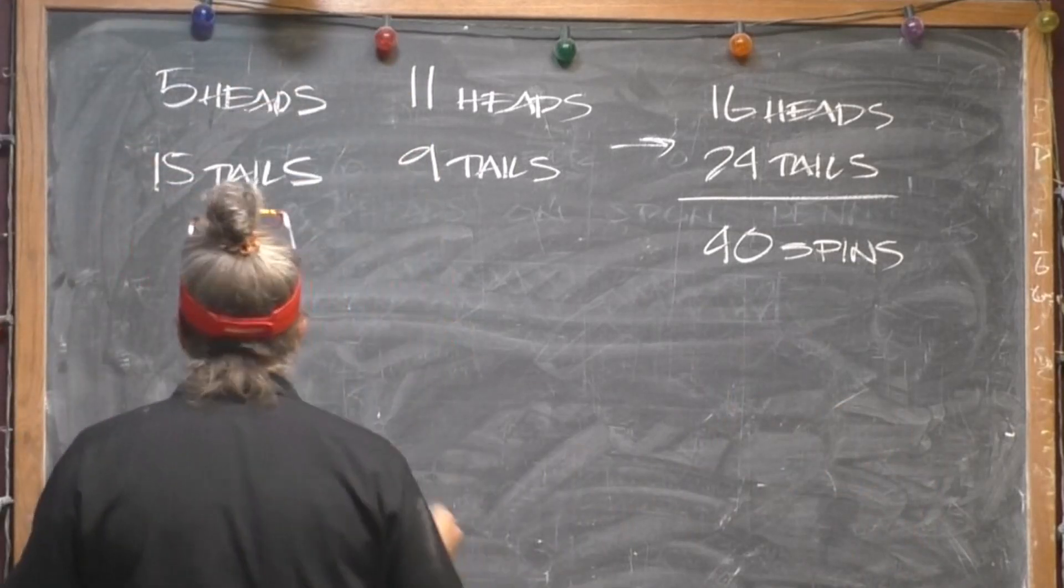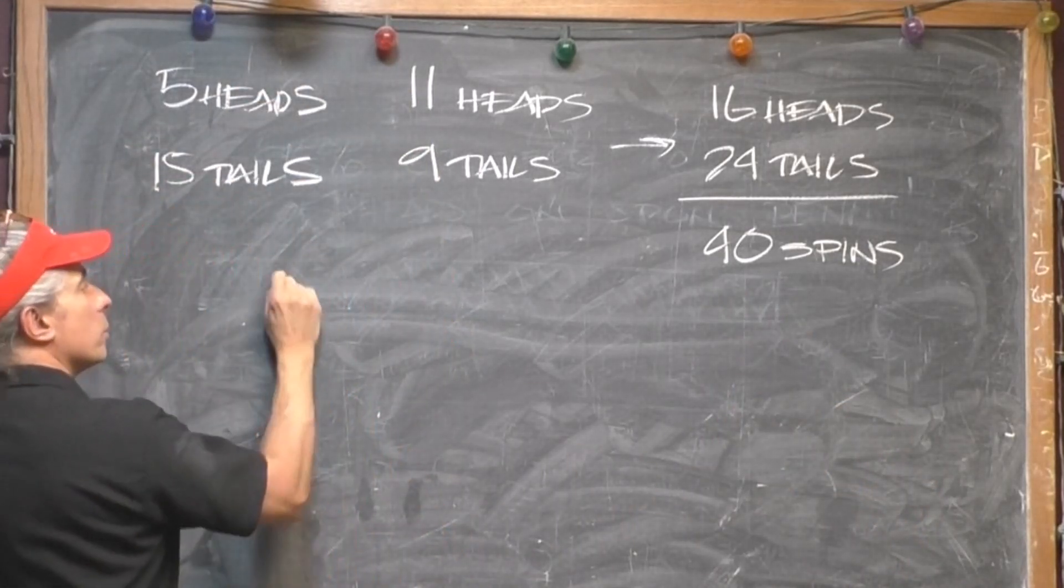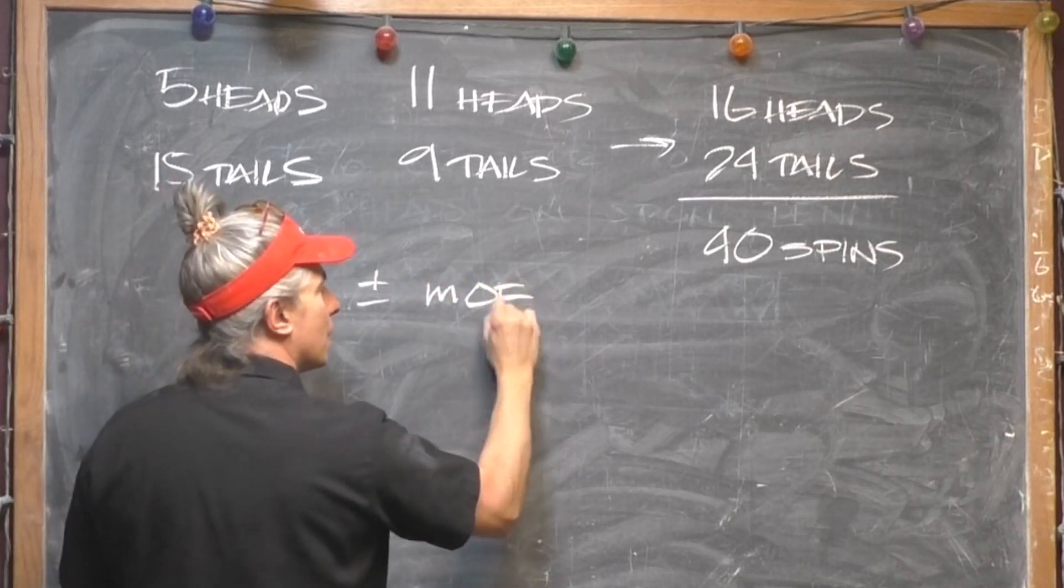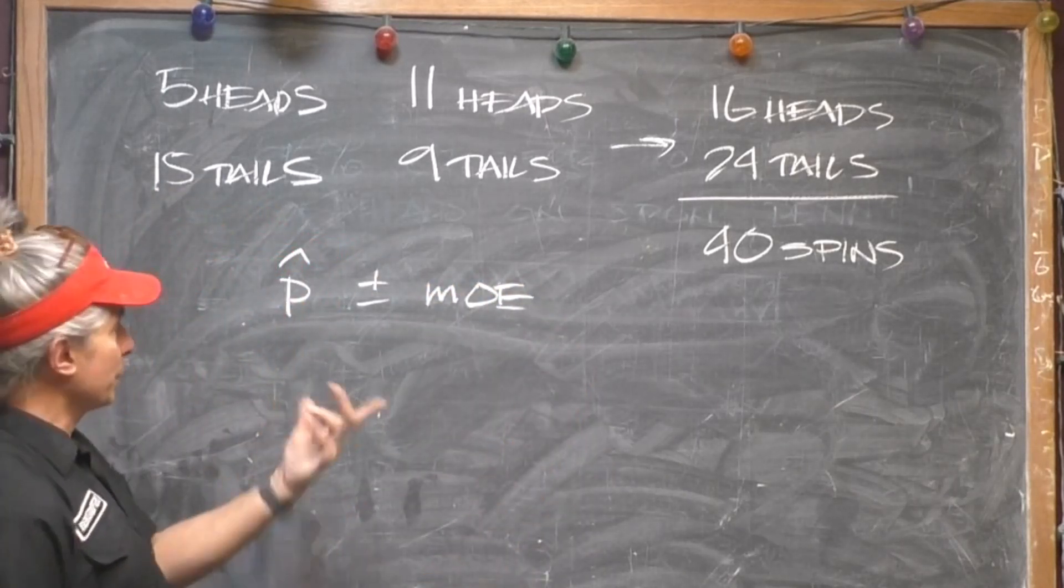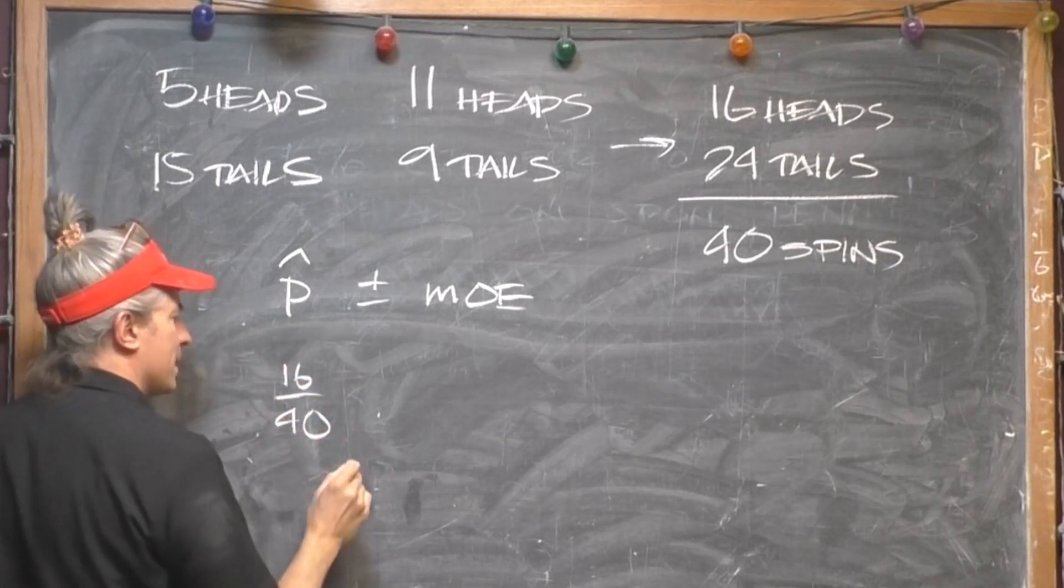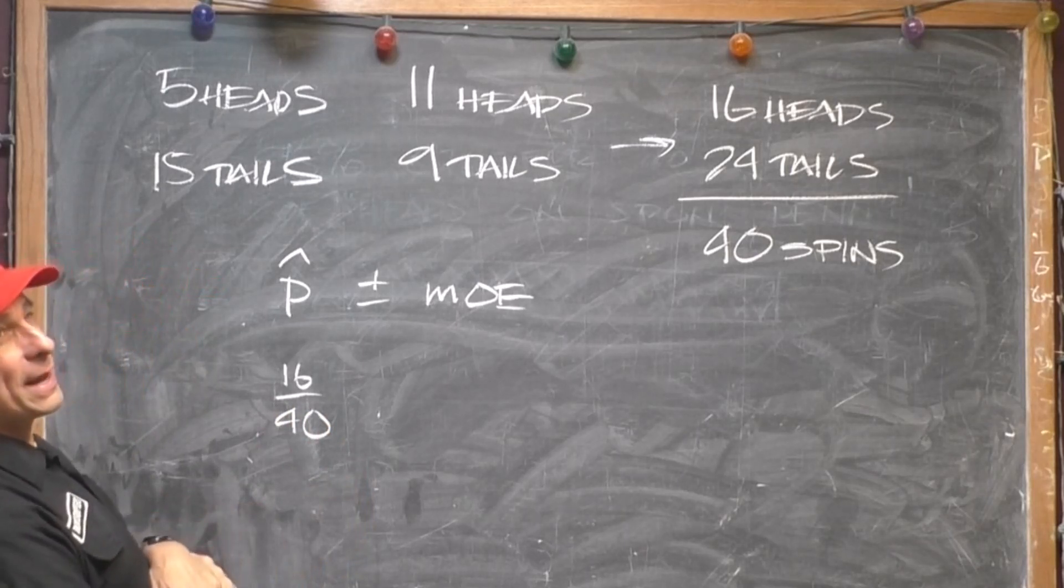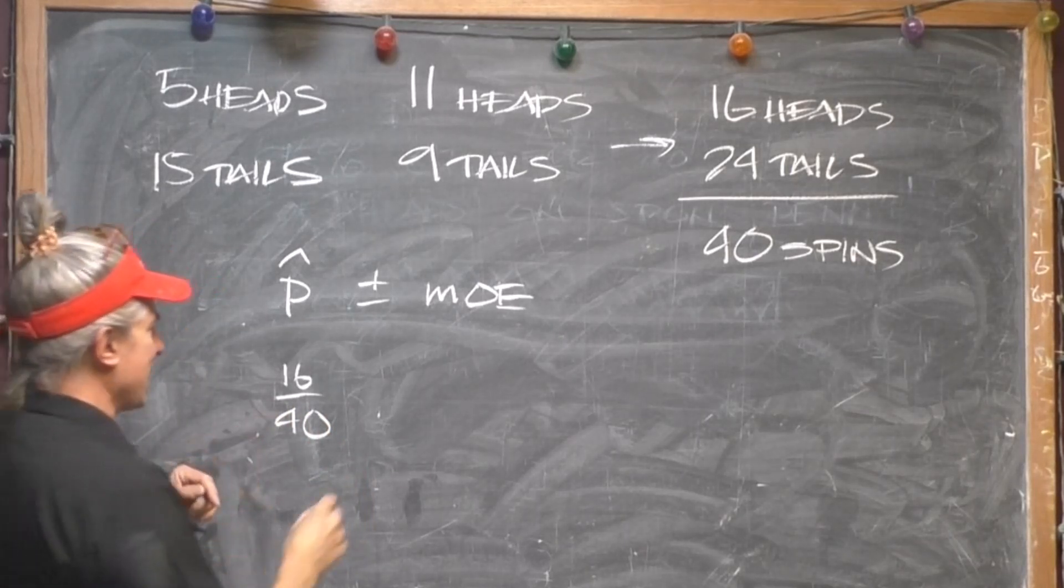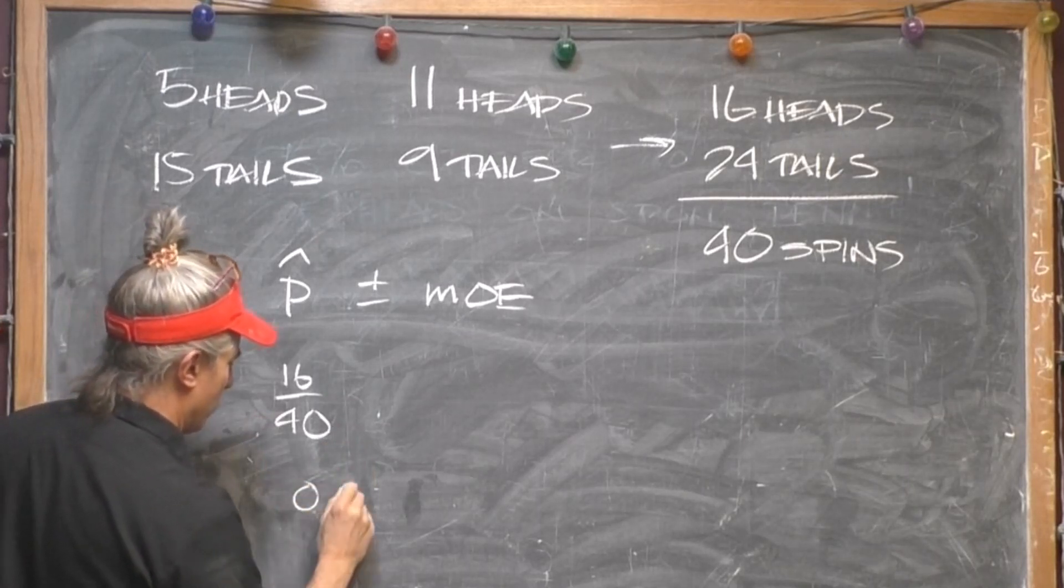Okay, so we've got to do the sample proportion plus or minus its margin of error. And that's going to give us our 95% confidence interval in this case. Okay, so this is going to be 16 out of 40, okay, 16 out of, what's that, 8 twentieths. That's going to be 40% I think. Yeah, 40% .4.